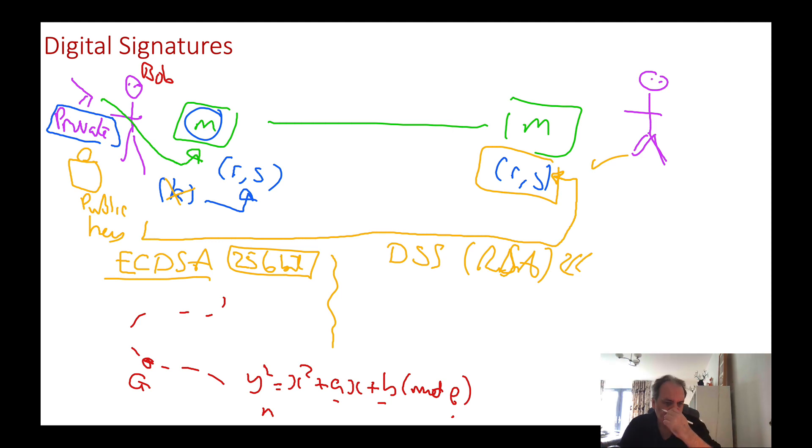On our curve we have a G value, which is the base point where we start our operations. We work out our private key, which is a random value. If we use a 256-bit curve like SECP256K1, we have a 256-bit value. We multiply the base point with the scalar value PK. This operation adds G lots of times - G plus G plus G, PK times, until we get the point PK. It's quite an efficient operation on elliptic curves.